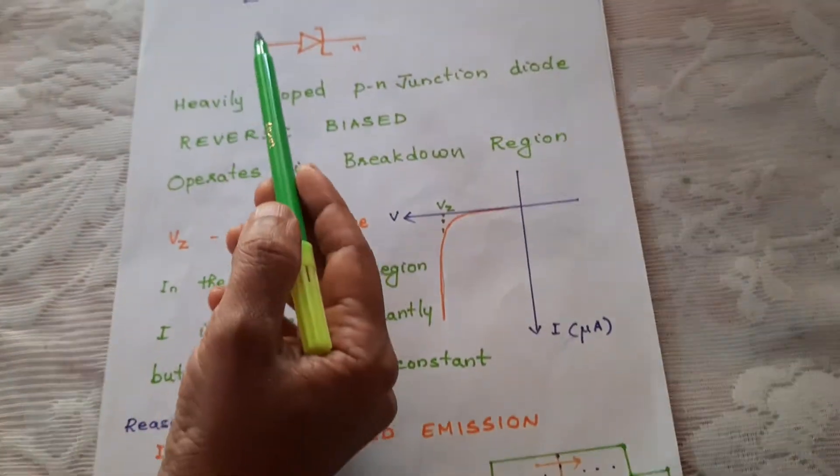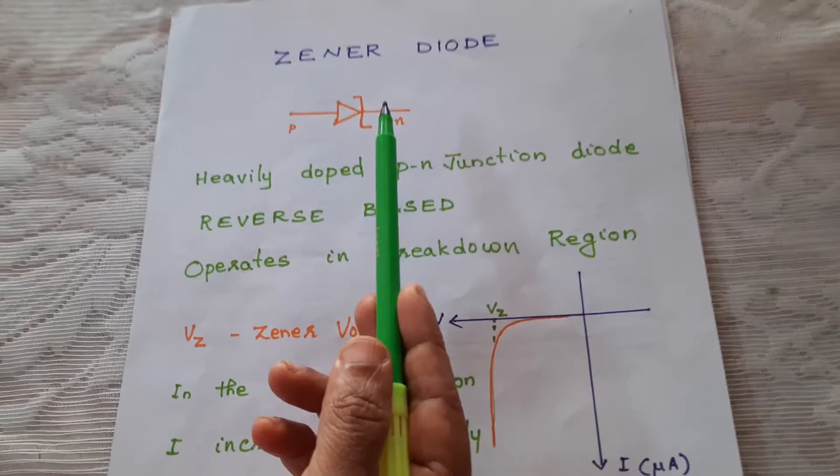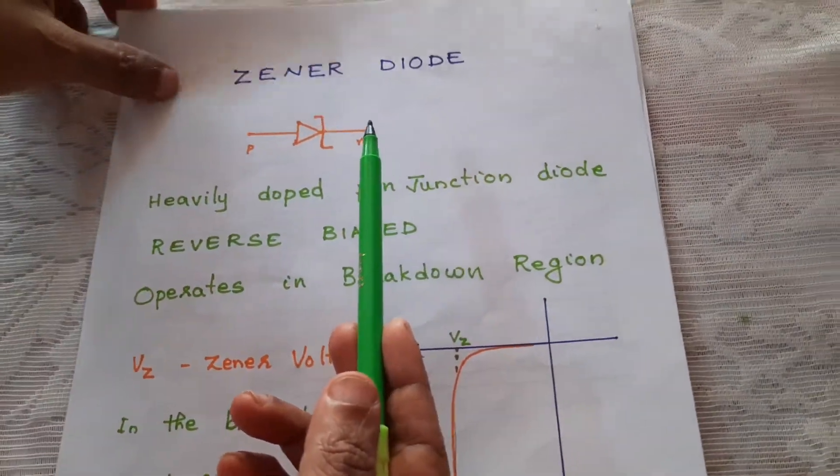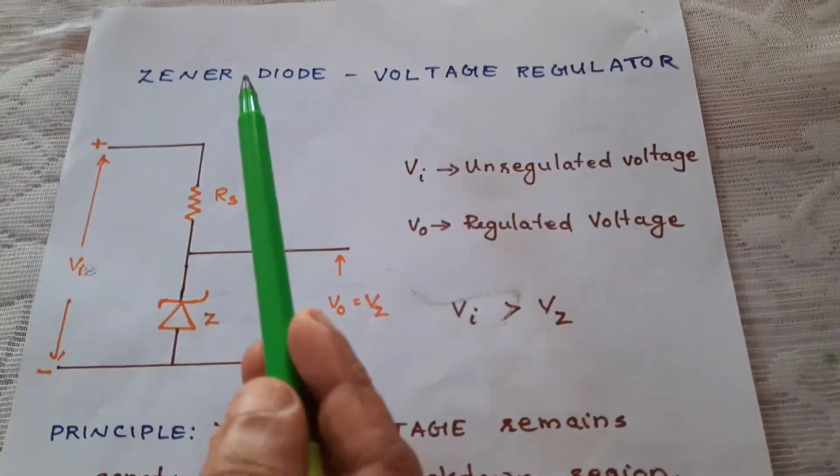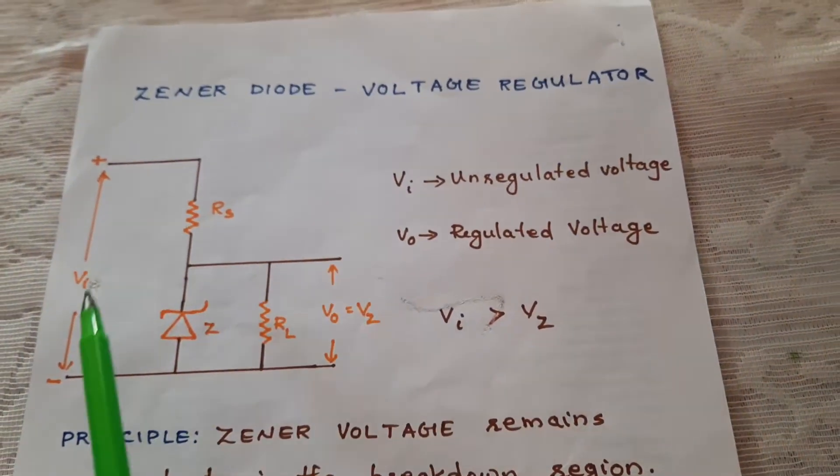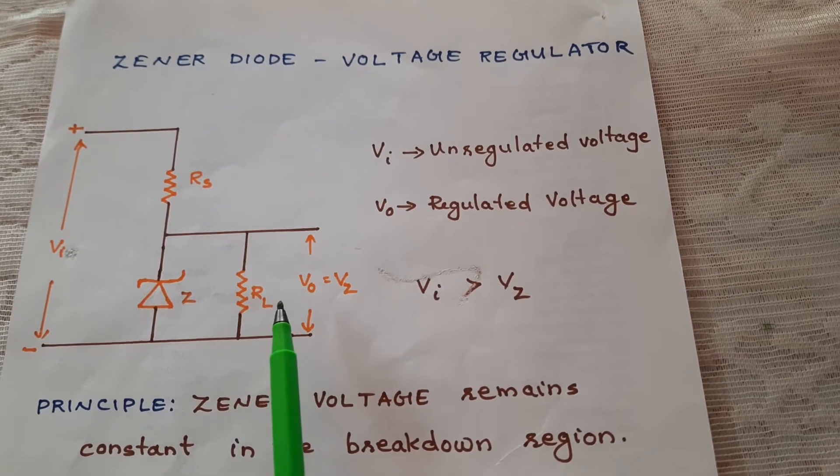And the Zener diode is used as a voltage regulator. The circuit of a voltage regulator is shown here.